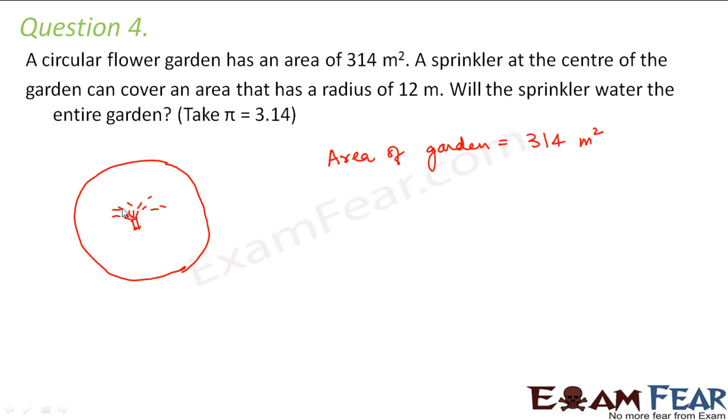What does a sprinkler do? A sprinkler spreads water to the plants in the garden. It is located at the center, and this sprinkler can cover an area that has a radius of 12 meters. Now we have to find out how much area the sprinkler covers, because only the radius is given.